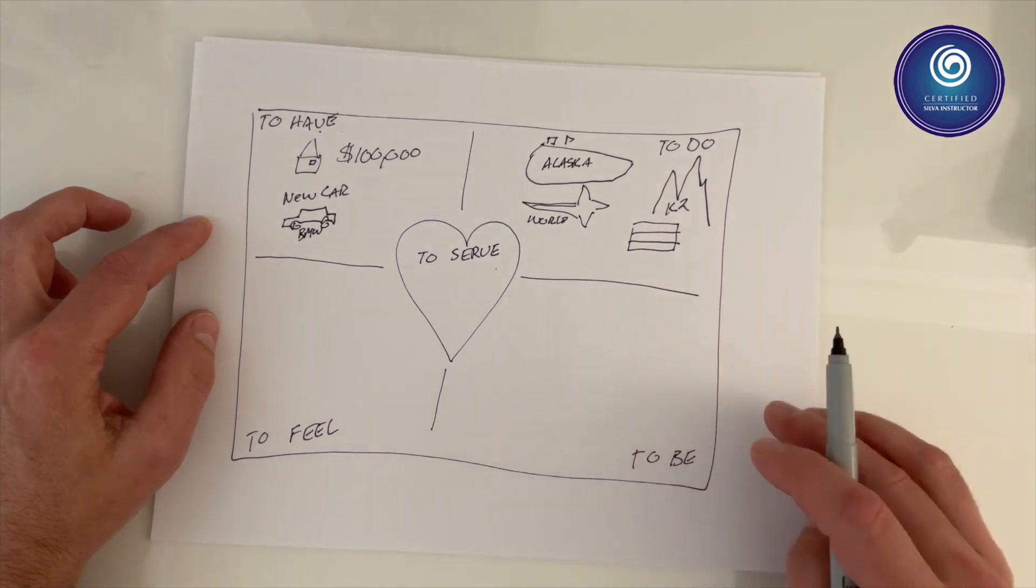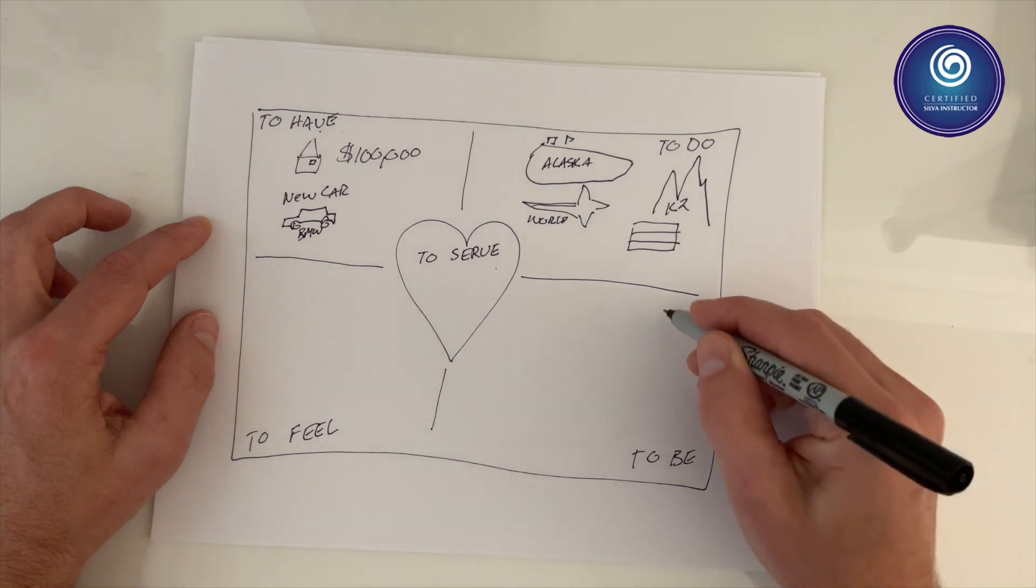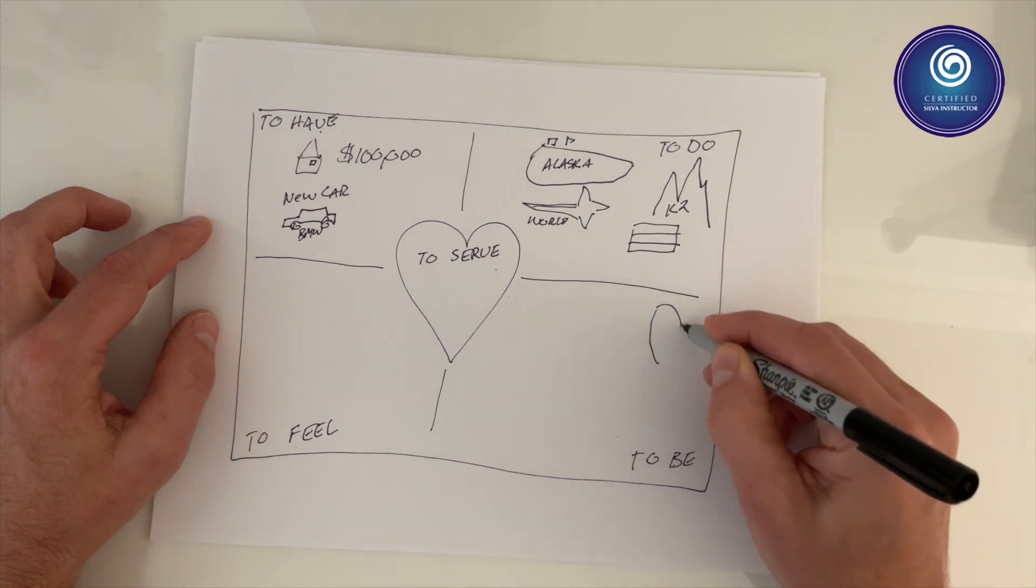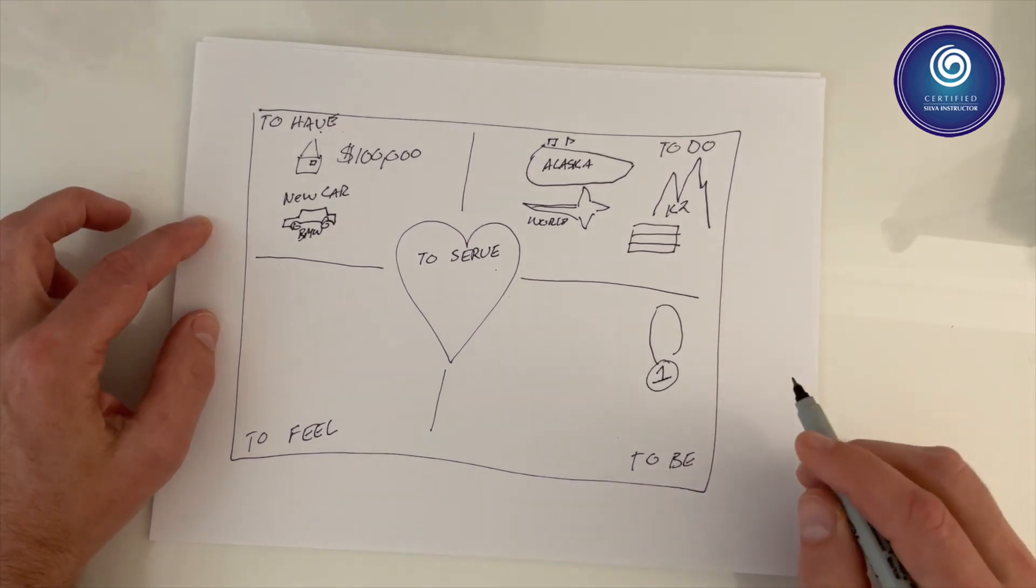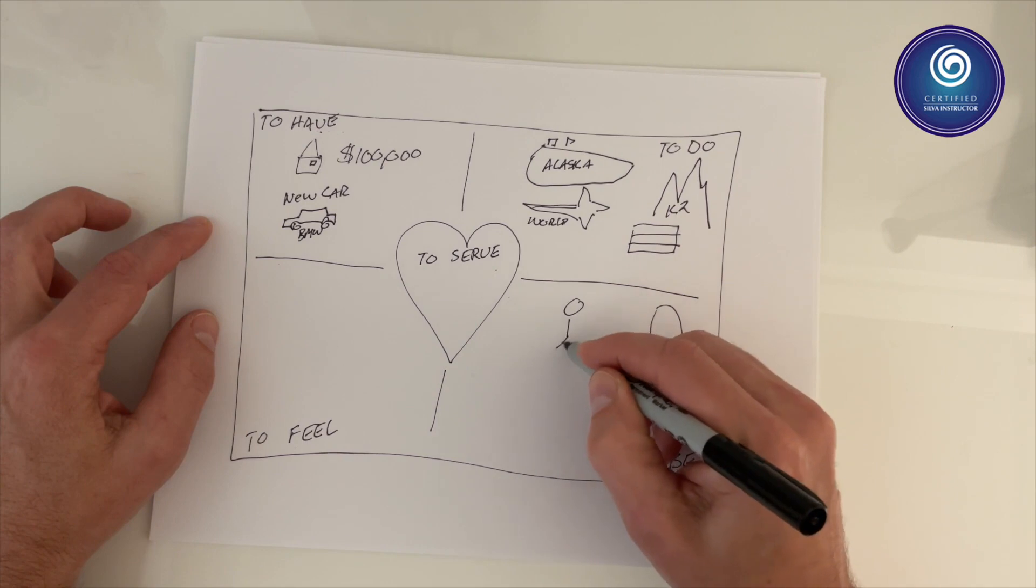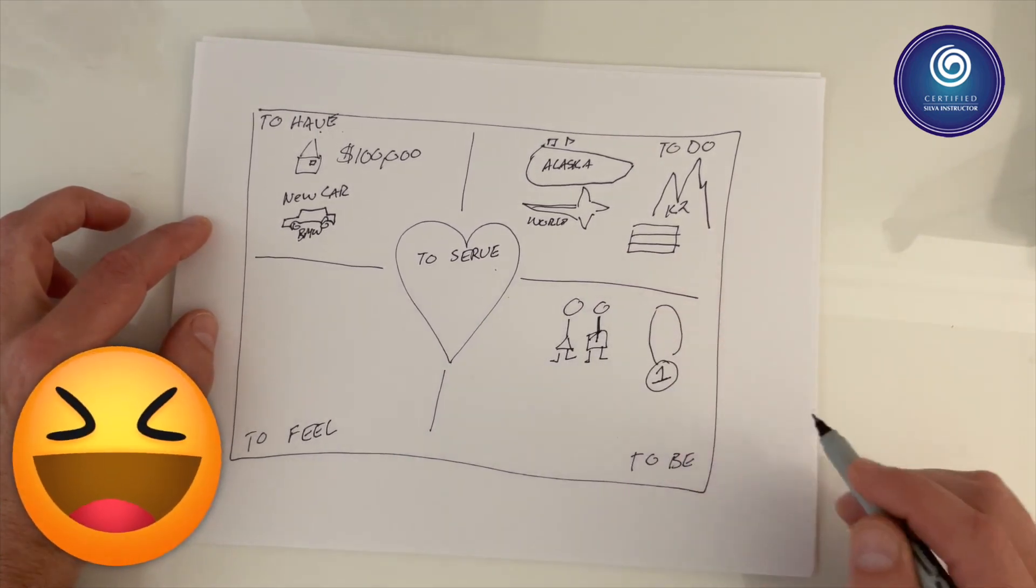Down at the bottom right, write down the things that you want to be, who you want to be. Perhaps you want to be the best at something - you can imagine, maybe in sports, you want to be number one. Or you want to be the best parent. Perhaps the best father.